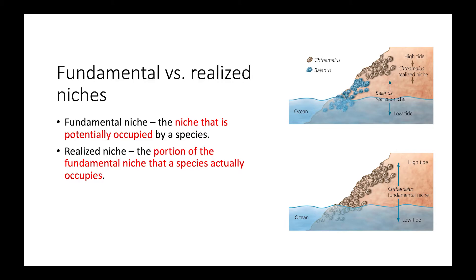When they did that, as you can see in this next panel, the Thamelis organisms spread out from the high tide region all the way down through the low tide region. Because this is the area that this species can potentially occupy when it's on its own, this would be the fundamental niche for Thamelis.